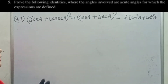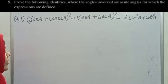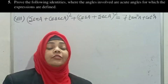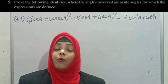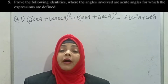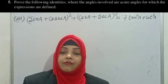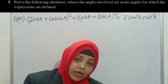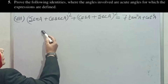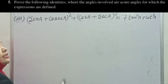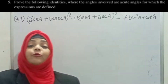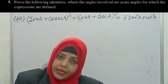So let's come with me. The question says: prove the following identities, where the angles involved are acute angles for which the expressions are defined. We need to show that LHS equals RHS — this side is equal to this side.